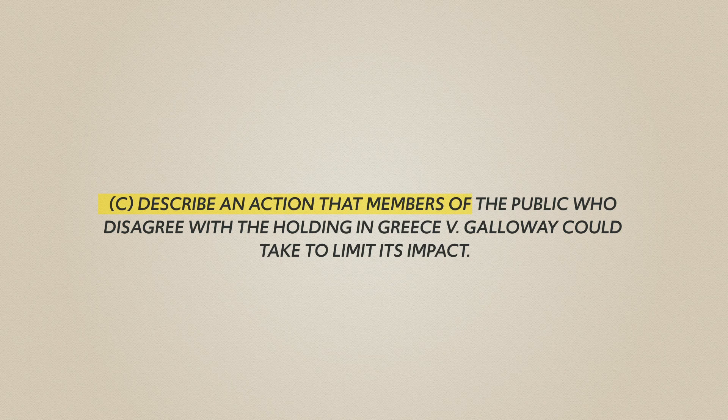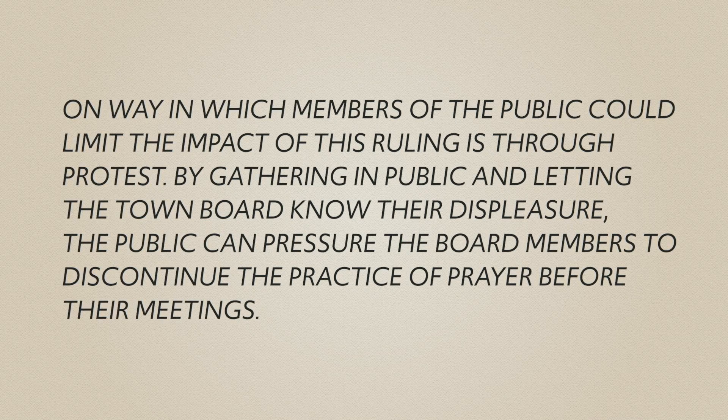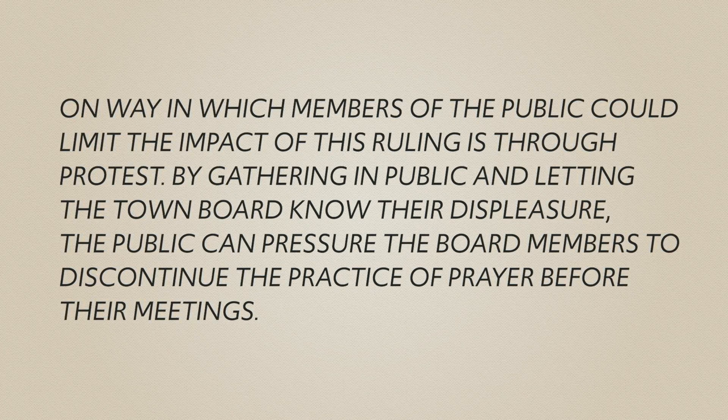Part C asks: describe an action that members of the public who disagree with the holding in Greece v. Galloway could take to limit its impact. There are lots of options: protest and pressure public employees to remove the prayer, use the media to convince the public of their cause, or vote against town board members who favor the prayer. Choose one and write about it: 'One way in which members of the public could limit the impact of this ruling is through protest. By gathering in public and letting the town board know their displeasure, the public can pressure board members to discontinue the practice of prayer before their meetings.' That is how you get full points on the first three FRQs.